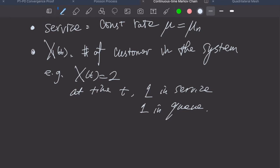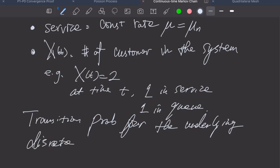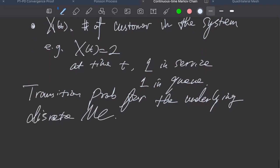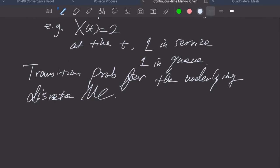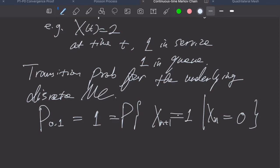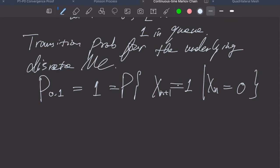Apparently, we can think about the transition probabilities for the underlying discrete Markov chain. P_01, like we said last time, is of course one. This is simply given after the nth transition, where at state zero there was no one, then the next transition must be the total number of customers in the system becomes one.